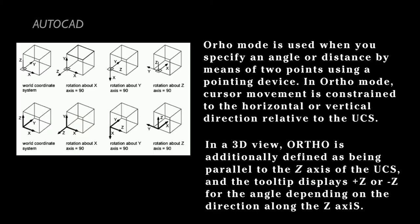Another place where you see 'ortho' being employed is in AutoCAD — basically the mode that you draw in, referring to ortho as the real-life situation. A pseudo would be kind of theoretical in AutoCAD. The ortho mode is used when you want to specify an angle for distance by means of two points using a pointing device, or when the cursor movement is constrained to the horizontal or vertical direction relative to the UCS (user set parameters). And in a 3D view, ortho is basically defined as being the Z also — so you're either a positive or a negative, but still on the same Z line.